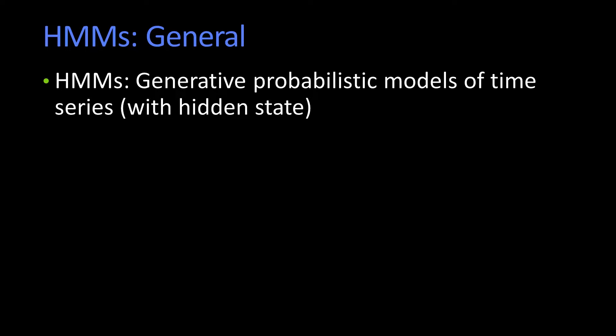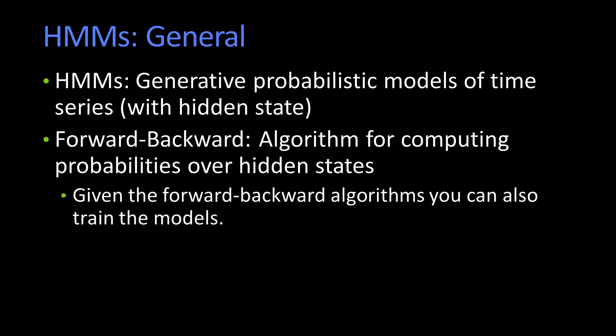We'll talk about HMMs just in general, and then we'll move on to vision. In general, HMMs are generative models of time series with some notion of a hidden state — that is, they can talk about the probability of generating particular output. The forward-backward algorithms, those recursive ones, allow you for computing over the states, and you can also use that computing to train up your models.